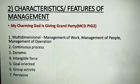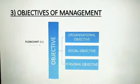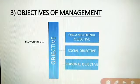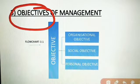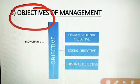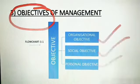The next topic is objectives of management. Objectives are the end results toward which organizations are directed — they are the ultimate goals that the management or organization wants to achieve. There are three types of objectives: organizational objectives, social objectives, and personal objectives.